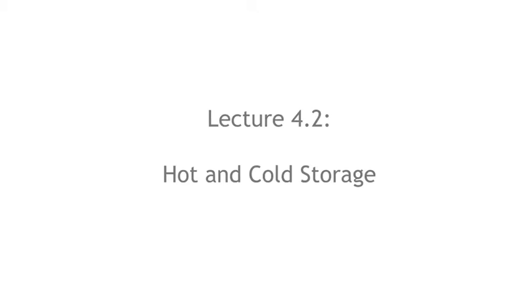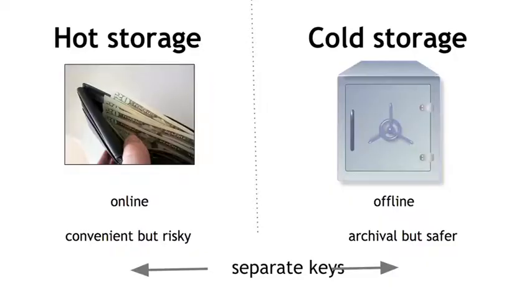In segment 4.2, we'll talk about hot storage and cold storage. Recall that in 4.1, we talked about how to store Bitcoins on your local computer, the equivalent of carrying money around in your wallet or your pocket. The idea of hot and cold storage is that you're going to have some storage which is hot or online, as on your phone or in your local computer. As we covered before, storing Bitcoins in that way is convenient, but it's also somewhat risky.